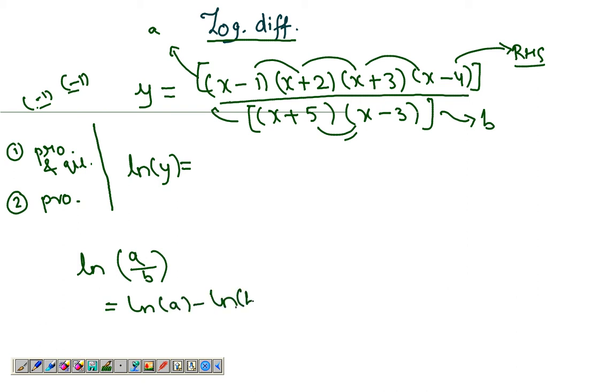Which is simply log of a take away log of b using the basic property of log, so I can write this as log a minus log b. Now a is a product of four things - one, two, three, four.